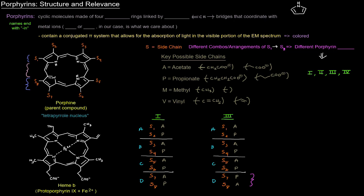Let's start with defining porphyrins. Porphyrins are cyclic molecules made of four pyrrole rings — pyrrole is right over here, that is the structure of pyrrole — four pyrrole rings linked by methane bridges, and this is a methane bridge, and that coordinate with metal ions, specifically iron ions. In particular iron 2+, but there's also iron 3+, as we'll talk about at some point later in the series.